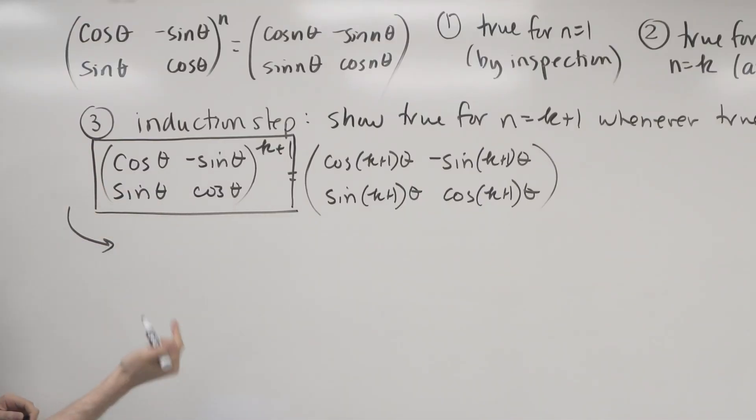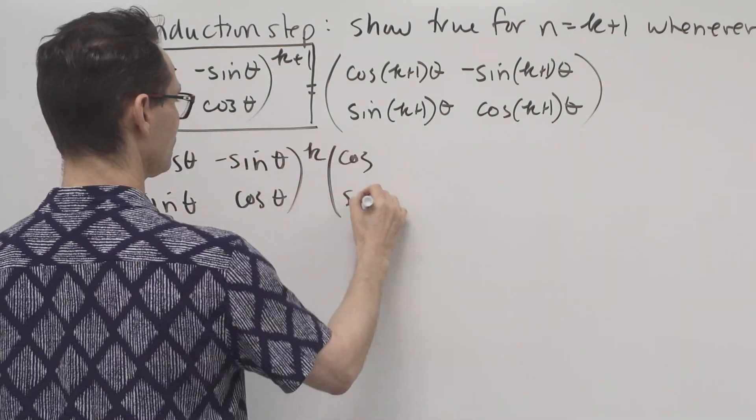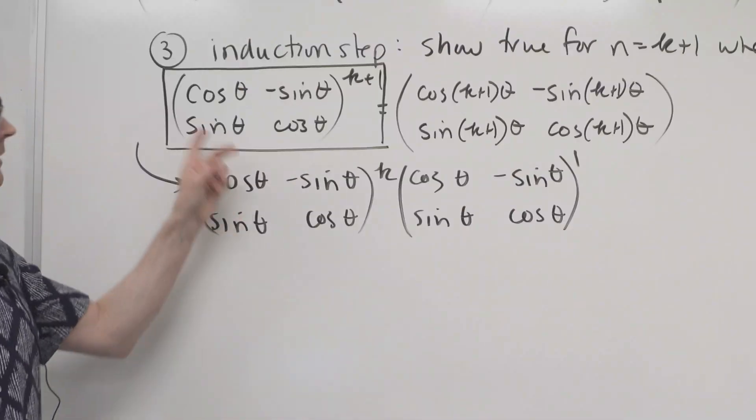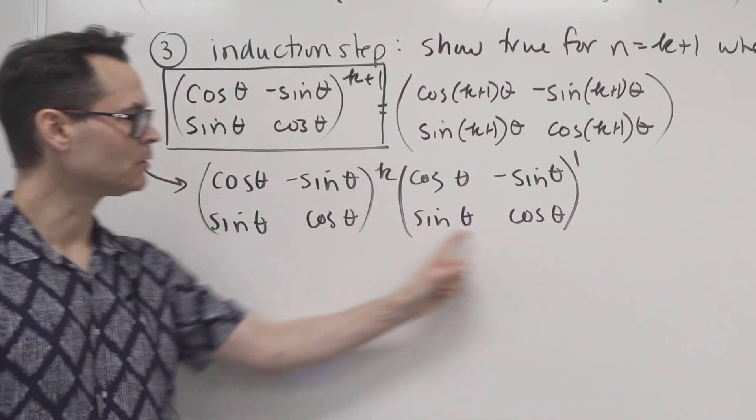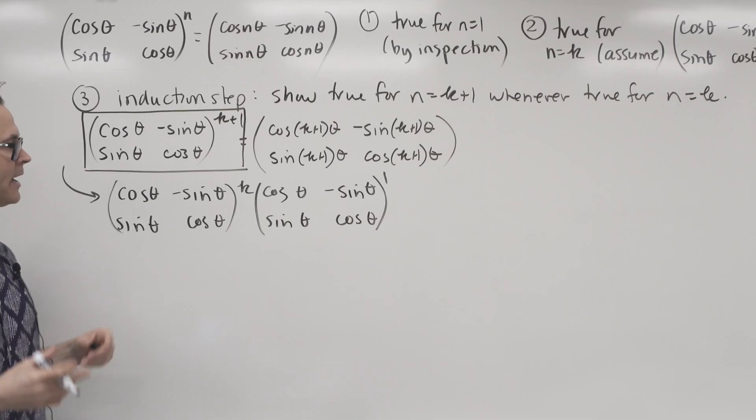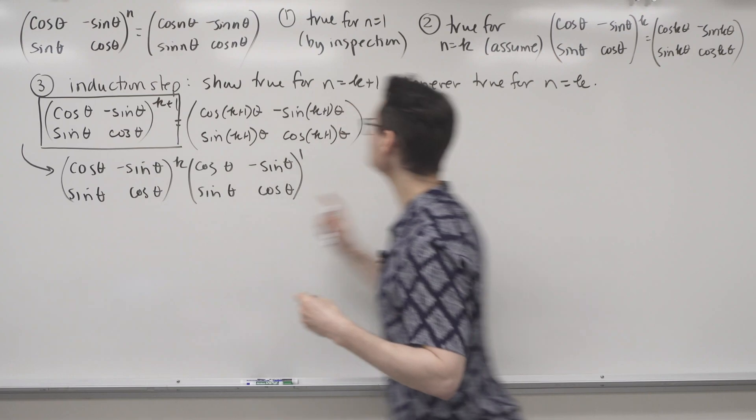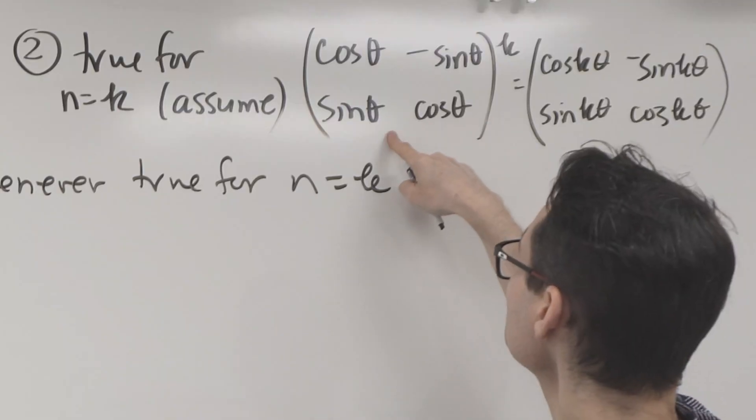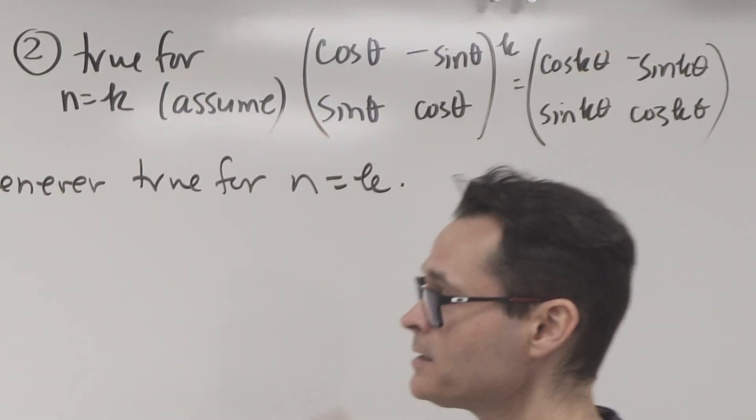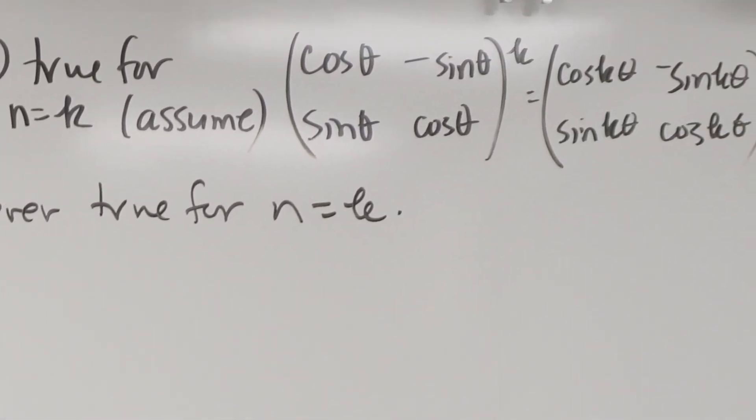So watch what I can do. I can take the left-hand side. I'm going to write it like this. So all I did was I took the left-hand side and I wrote it like this, just using some basic exponent rules. Well now look, this can be substituted using my assumption. So the assumption is that this is equal to that. So I could sub out this for the right-hand side up there.